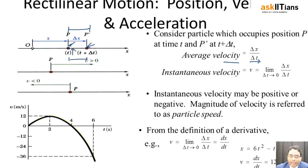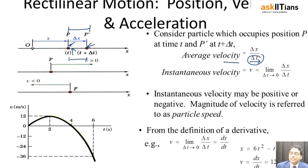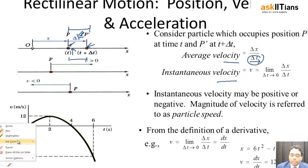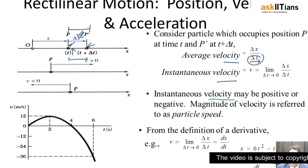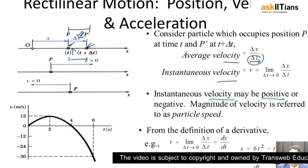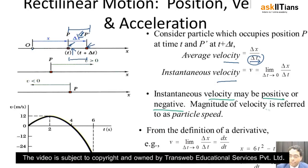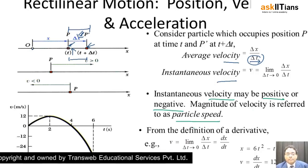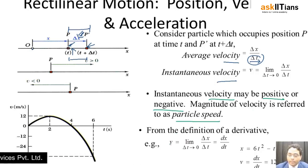For the instantaneous value of velocity, we put delta t approaching 0. Under the limit delta t approaching 0, we find how much the value of delta x changes — that gives the instantaneous velocity. The instantaneous value of velocity may be either positive or negative. Its magnitude is known as the particle speed.